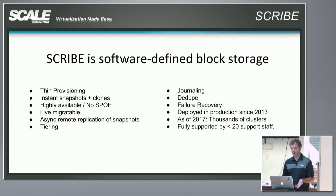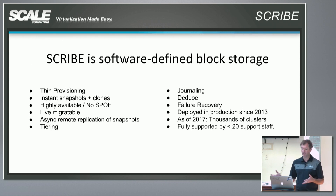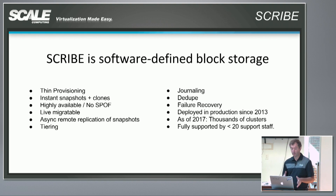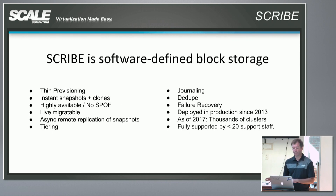A lot of these are table-stakes things like thin provisioning, snapshotting, and cloning. Having it be highly available — obviously if a node or component fails, you can't have a single point of failure. Live migration is supported with Scribe, and that's very important for our one-click upgrades, where we automatically live migrate virtual machines and those block devices stay reliable through that process.